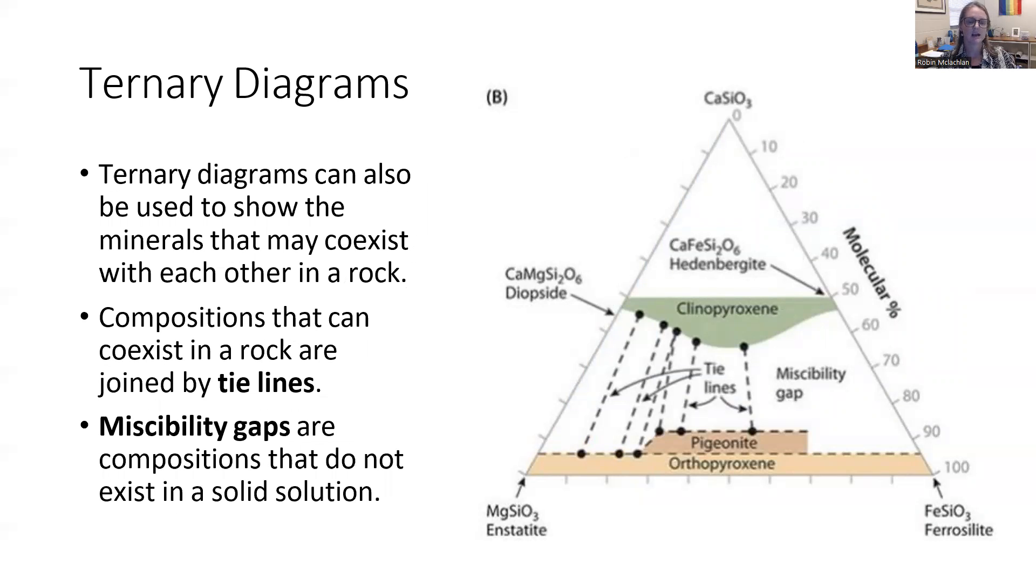Often on these ternary diagrams, you won't just see the end member minerals or what's possible. You'll also see what we call tie lines. And these are these black lines that show this mixture is possible. It is common for a rock to have any percentage along this line, along that tie line.